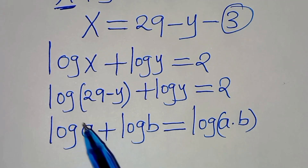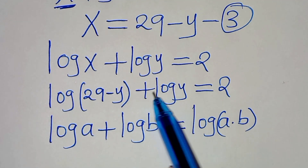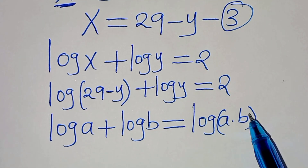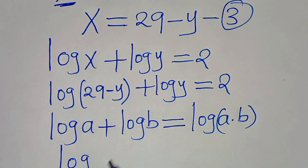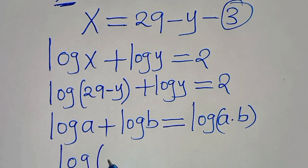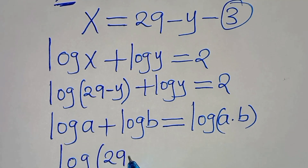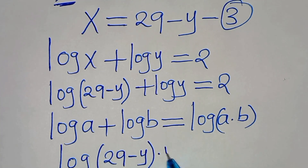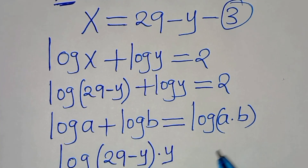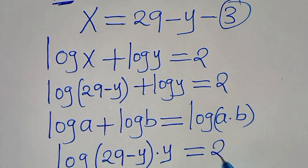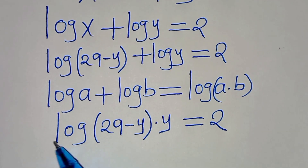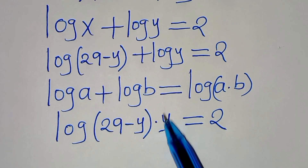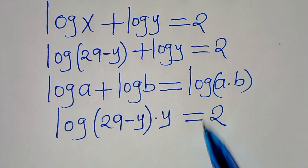Let's transform this into that form so that we have log of (29 minus y) multiplied by y, and this equals 2. So we have log[(29 minus y) times y] equals 2.